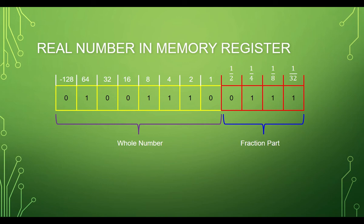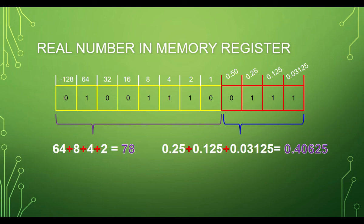Then let's convert the fraction part into decimal form. We will only consider those numbers with 1 and add them up. The whole number part equals 78, and the fractional part equals 0.40625. Adding them together results in 78.40625.